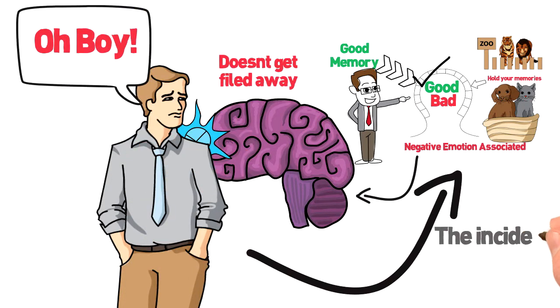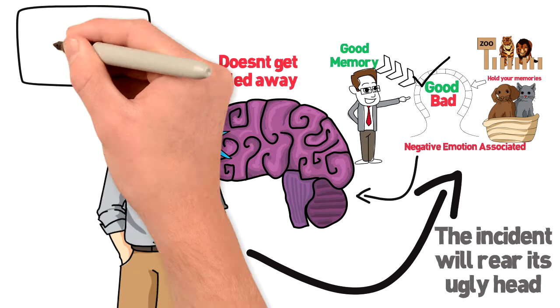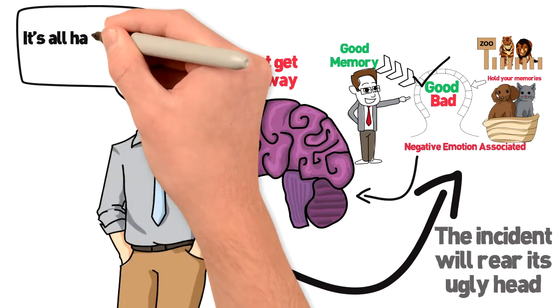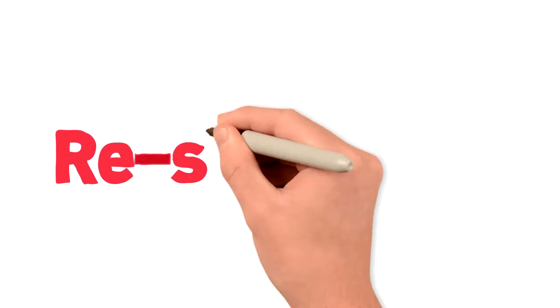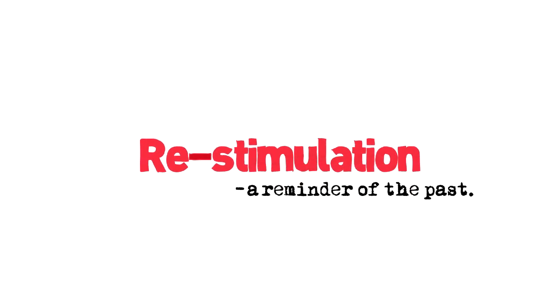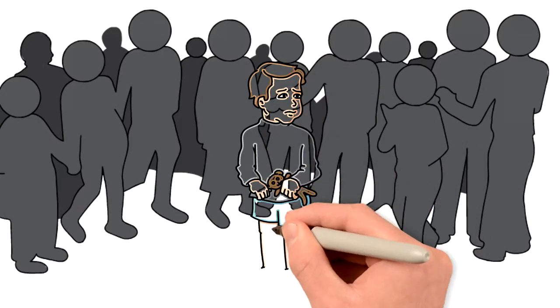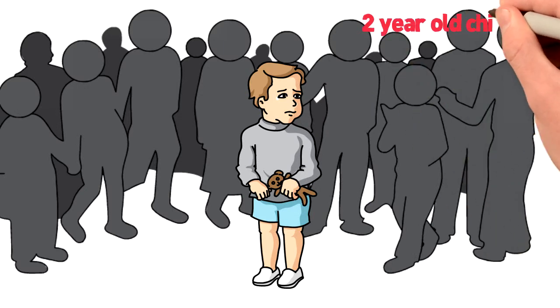In that moment, the negative emotion of the original incident will rear its ugly head and you will feel like it's all happening all over again. This is called restimulation, a reminder from the past. Imagine now that you're a two-year-old child, lost alone in a supermarket.